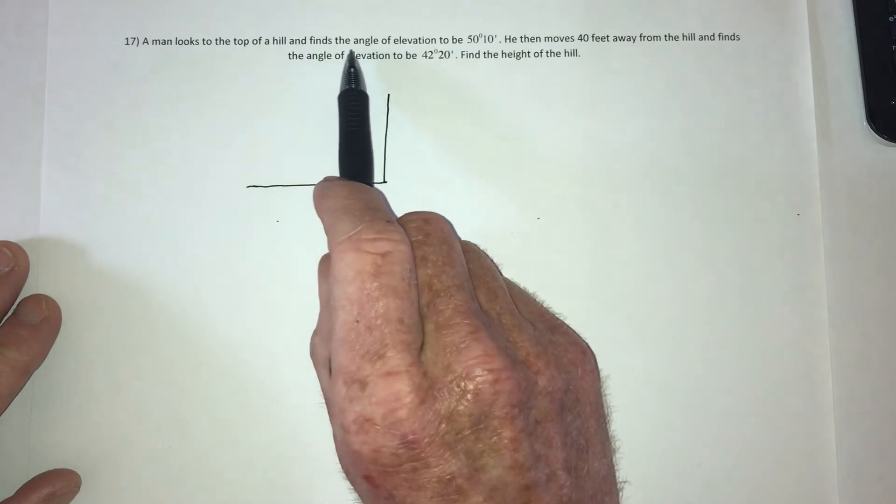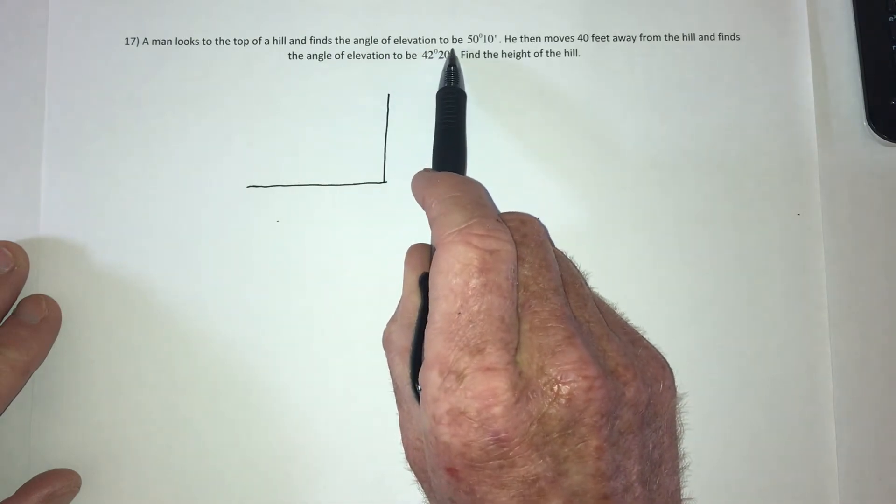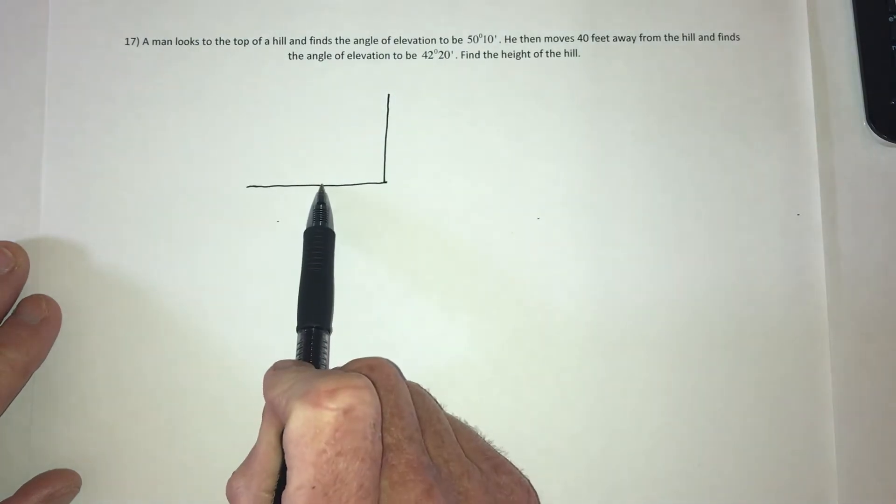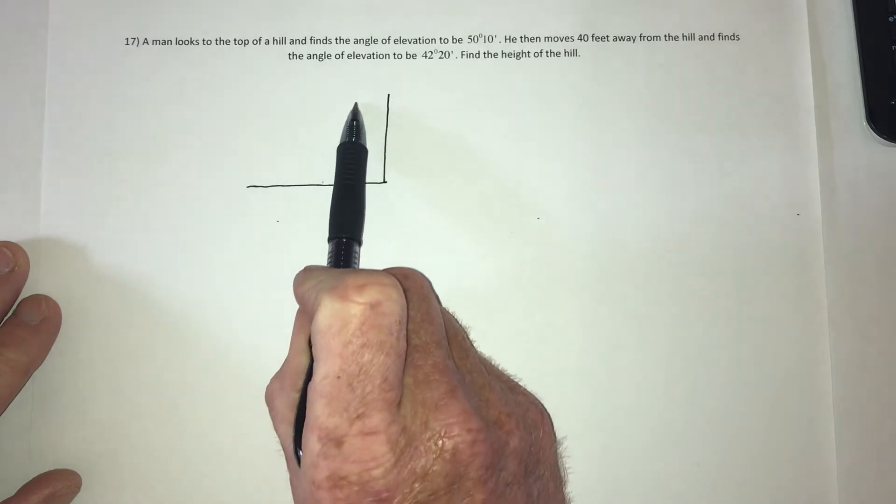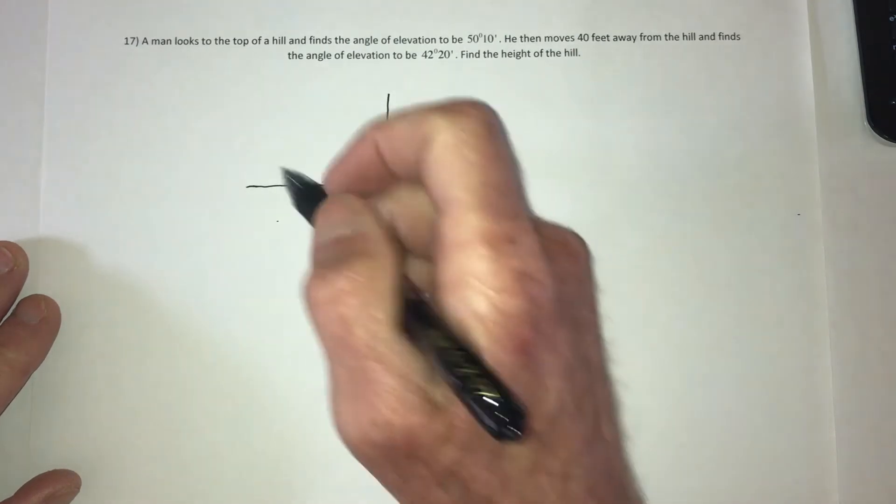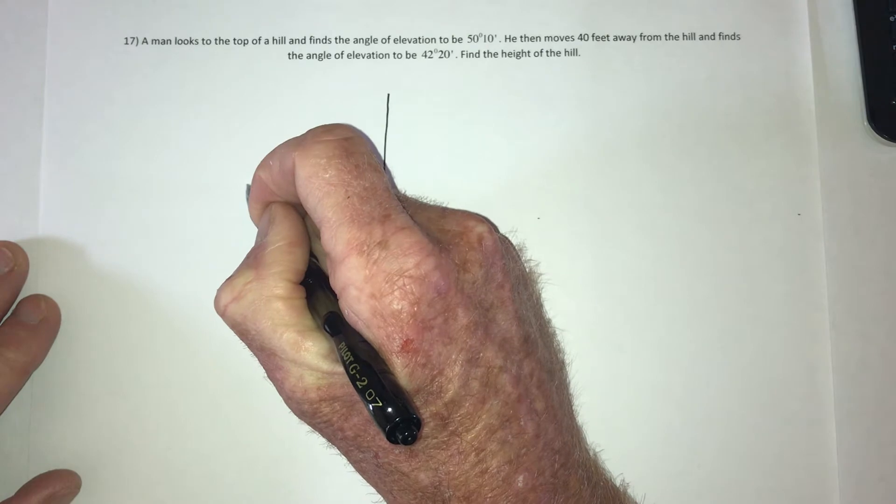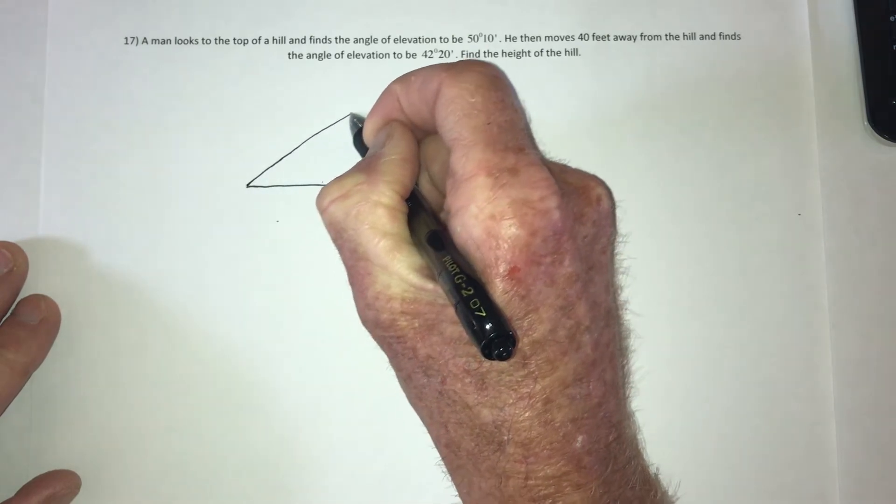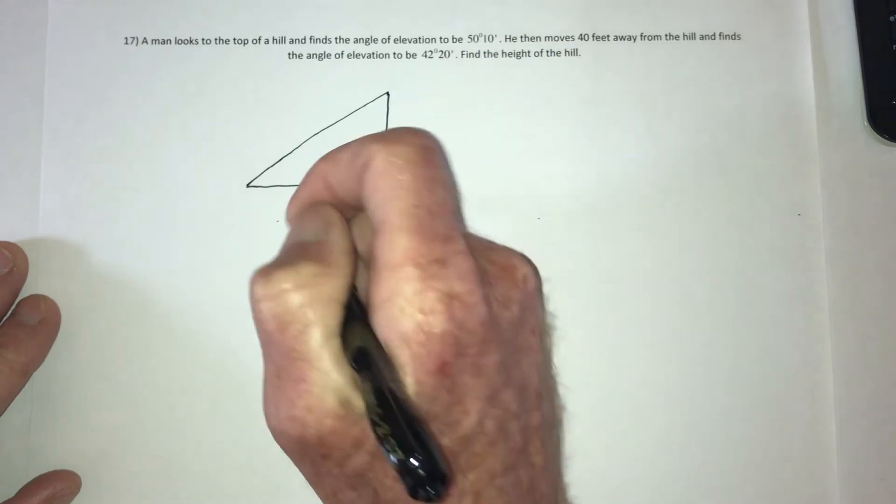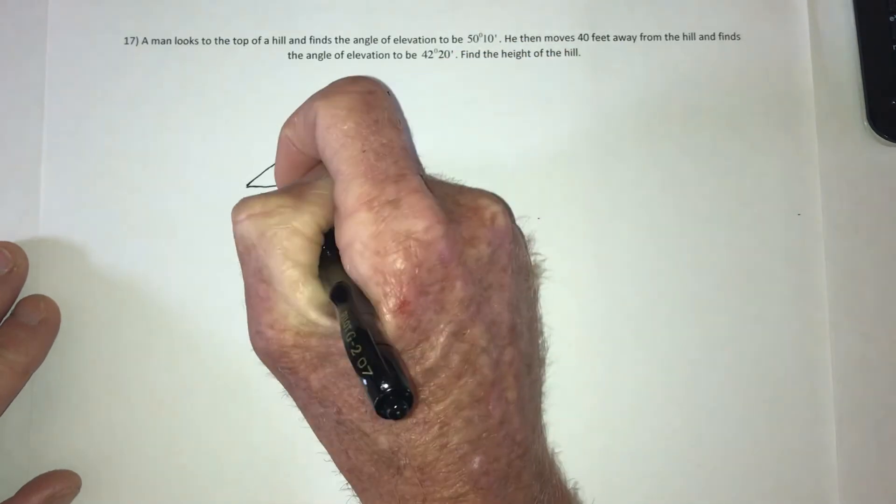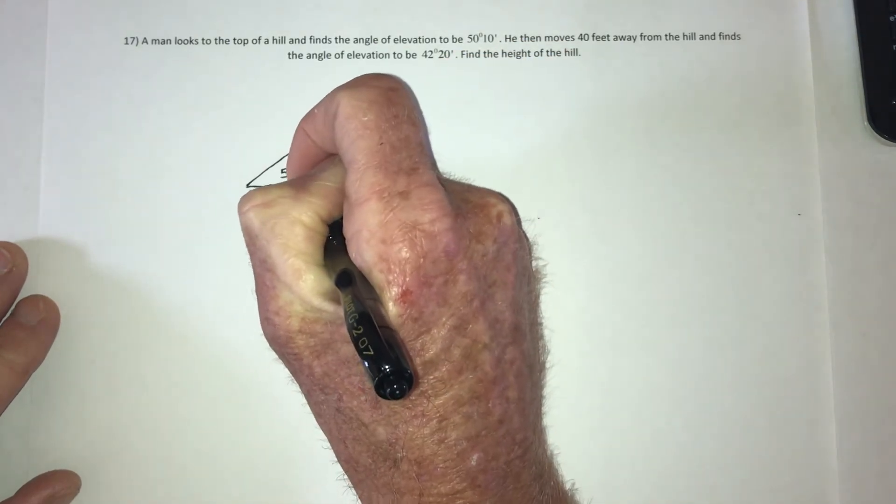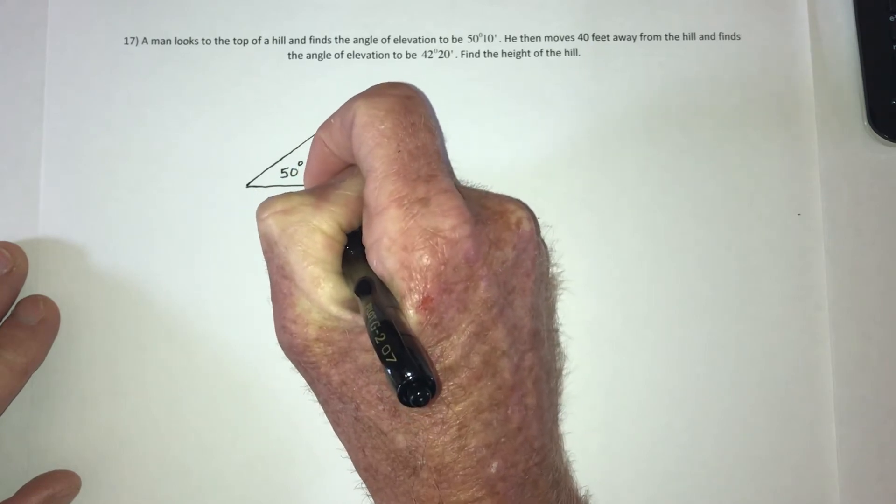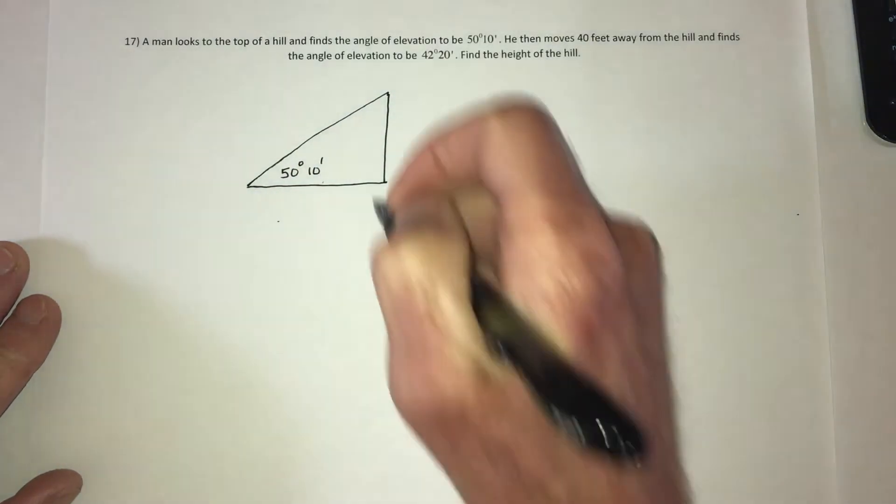So this person finds the angle of elevation, so that means looking from the ground up to the top of the hill. So that would be from where they're standing over here, they look to the top of the hill, and that angle is 50 degrees, 10 minutes.